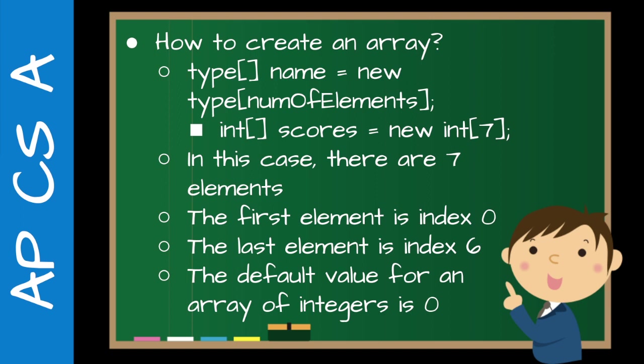As a reminder, just like with strings, the first element has an index of zero and the last element is index six. So it's zero, one, two, three, four, five, and six — which gives us seven elements in total. The default value for an array of integers is zero, so if you try to print out the values you would see all zeros at this point.